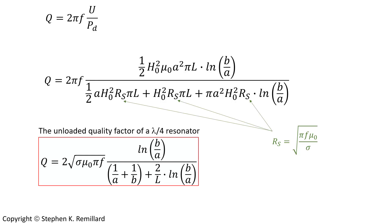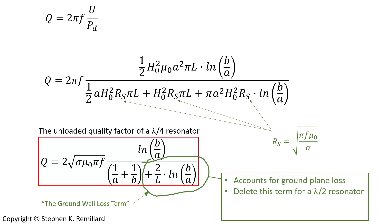The unloaded quality factor of a quarter wave resonator is this expression, and I want to point something out about this expression because there are a lot of credible sources out there that leave out this term in the expression, which is the ground wall loss term. If there's no loss on that ground wall that the rod's attached to, great, but I don't know how you accomplish that. There's always going to be loss. If you leave out this term, what you have is an expression for the quality factor of a half wave resonator.